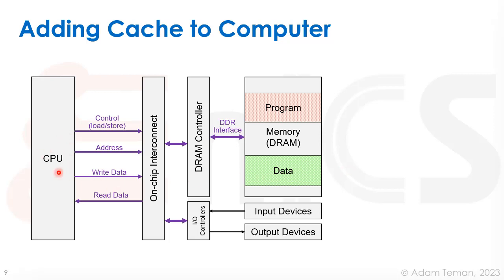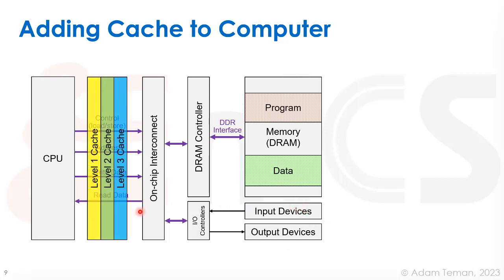Looking at our computer: the CPU has a bus with address, data, and control lines going to the on-chip interconnect, which talks to the DRAM controller and then out through a DDR interface to main memory where both program and data are stored, as well as to IO controllers for memory-mapped IO. Adding a cache means inserting another level of storage in between, with level one, level two, and level three caches storing some of main memory much closer to the CPU, so we don't have to traverse all that interconnect just to read or write a byte of data.